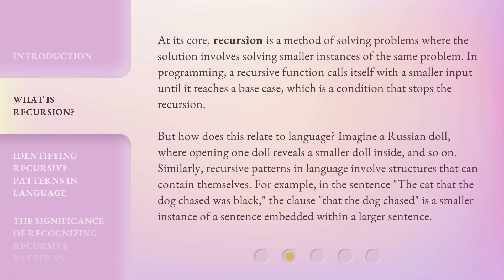At its core, recursion is a method of solving problems where the solution involves solving smaller instances of the same problem. In programming, a recursive function calls itself with a smaller input until it reaches a base case, which is a condition that stops the recursion. But how does this relate to language?